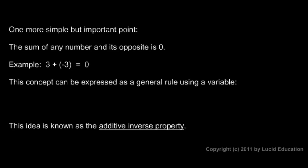One more simple but important point: the sum of any number and its opposite is 0. That should make a lot of sense. 3 plus negative 3 is 0.